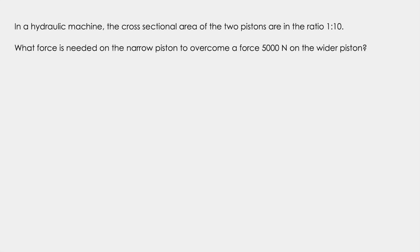Now let's look at another problem. In a hydraulic machine the cross sectional area of the two pistons are in the ratio 1 is to 10. What force is needed on the narrow piston to overcome a force of 5000 Newton on the wider piston?